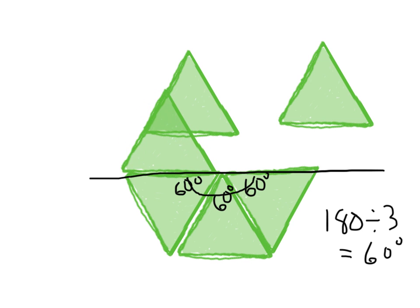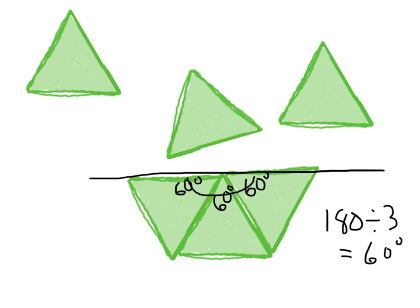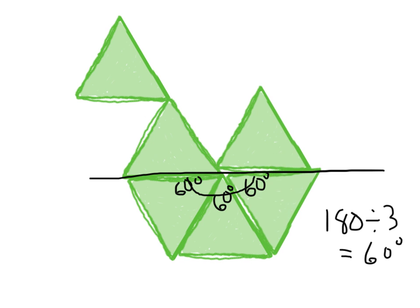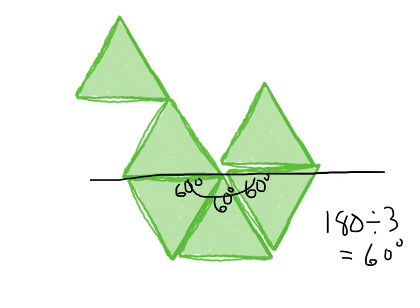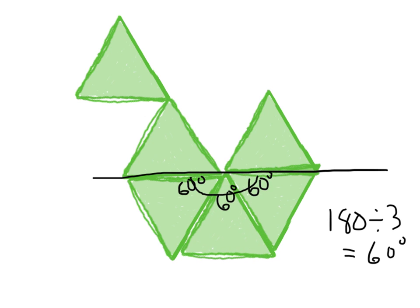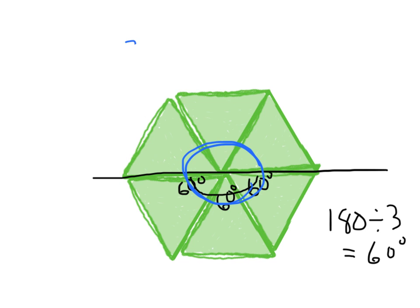But just to prove it, we can continue lining our triangles up. Let's put this one right here, this one right here, and this one right here. Look at that — we can see that all six angles form a perfect rotation. So 360 divided by 6 gives us 60. That means each of these acute angles is 60 degrees.